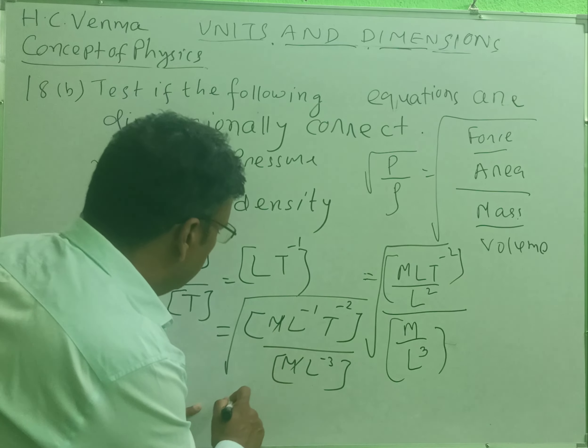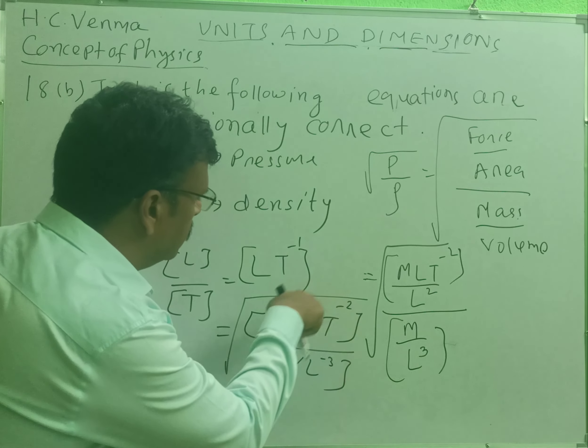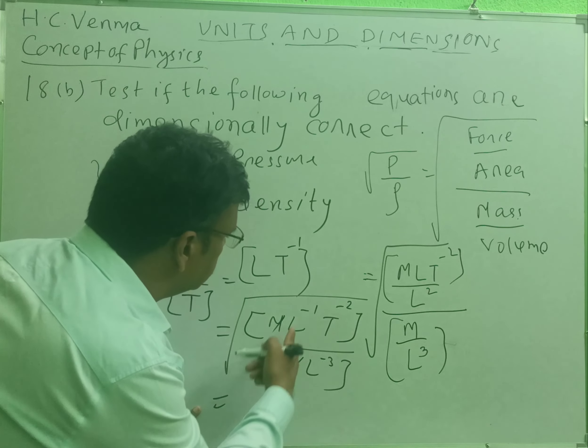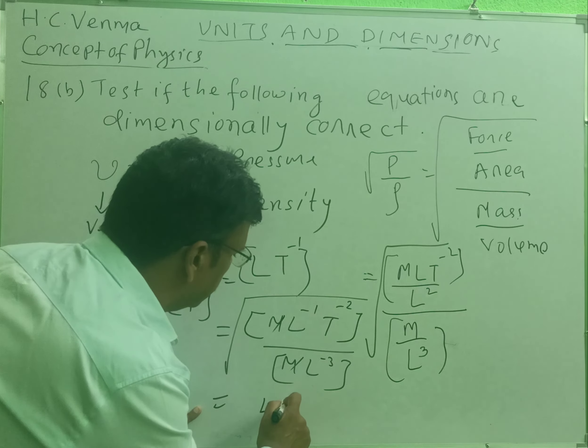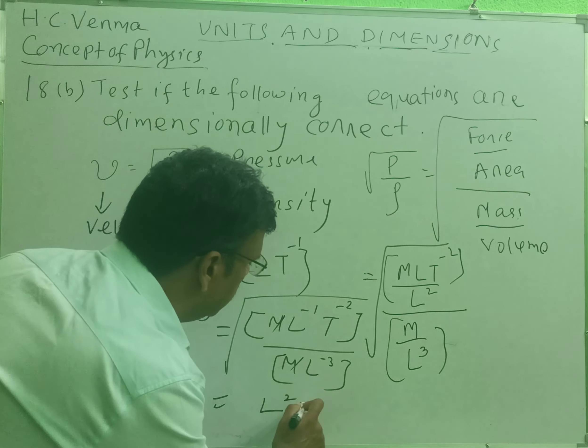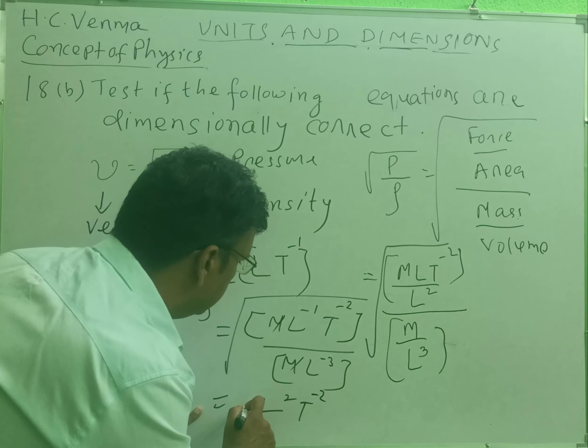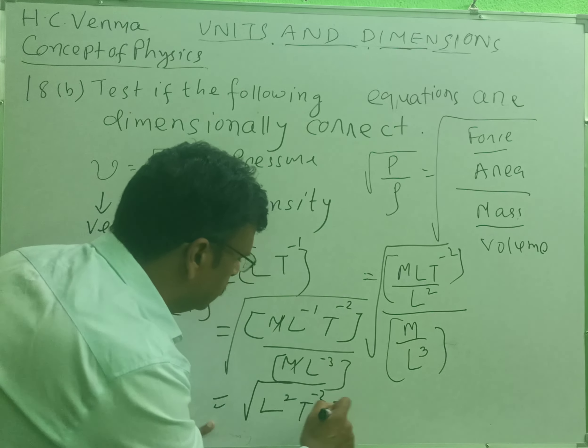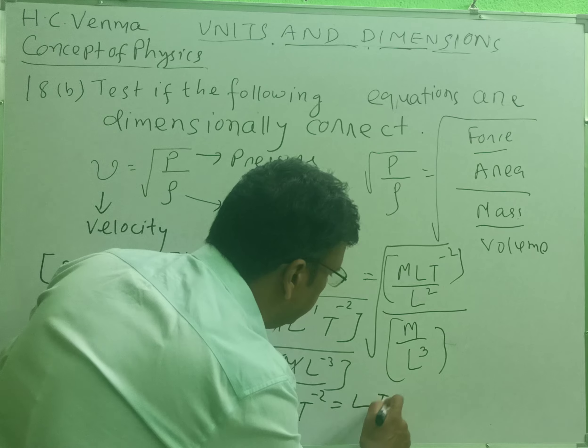This L^-3 when goes to upside, multiplying with L^-1 becomes L^2, and there is T^-2 to the power half, or square root. This becomes LT^-1.